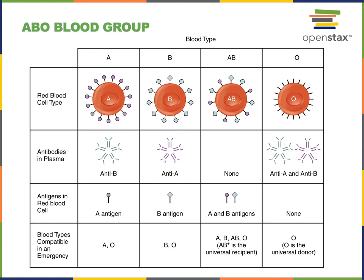Type AB blood has both the A and the B antigens on the surface of the erythrocytes. Therefore, a patient with type AB blood could safely receive a transfusion from type A blood, type B blood, or type O blood, as they do not produce any antibodies against the A or the B antigens.